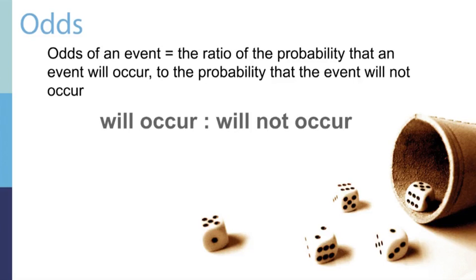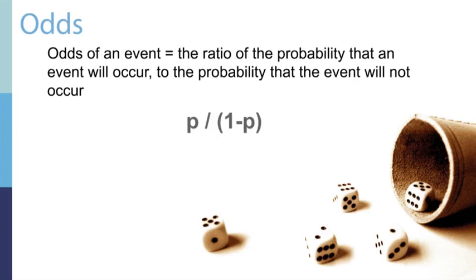In statistics, we refer to odds as the ratio of the probability that an event, such as a disease, will occur to the probability that the event or disease will not occur. Odds are sometimes used in epidemiology due to their convenient mathematical properties. We will use p as the symbol for a probability. The mathematical formula for odds is p divided by the quantity 1 minus p.